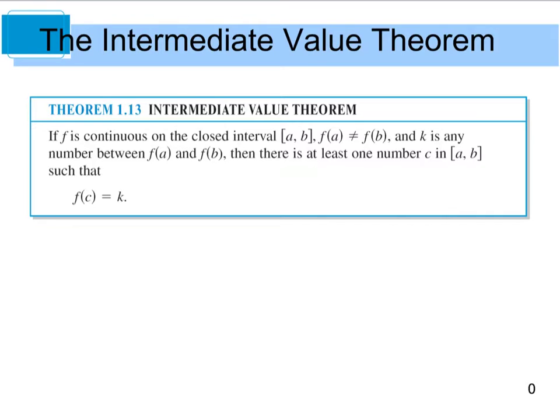As you can see from theorem 1.13, it says if f is continuous on a closed interval (represented with brackets), and the function evaluated at a is not equal to that function being evaluated at b, and k is any number that is between f(a) and f(b), then we know that we have at least one number c on that closed interval such that f(c) is equal to k.